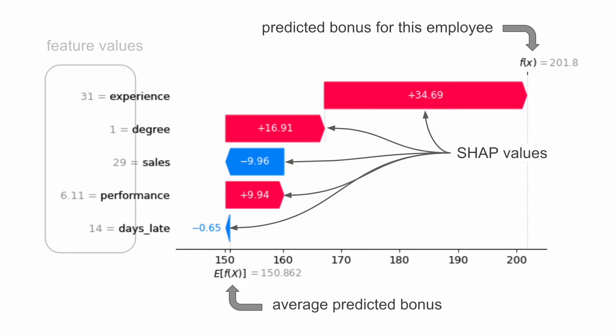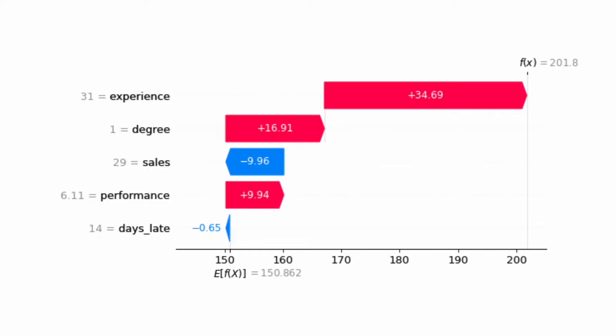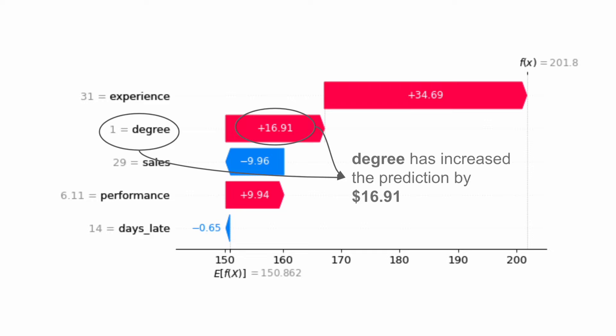The numbers on the y-axis are the feature values. For example, 31 equals experience tells us that this employee has 31 years of work experience. We can see that the SHAP value for degree is $16.91. Because this employee has a degree, the predicted bonus is $16.91 higher than the average predicted bonus. To simplify, we say the feature has increased the prediction. Keep in mind it is the feature's value in the context of the other feature values that produces the SHAP value — so the SHAP value for degree can change depending on which employee you are looking at, even if all the employees you look at have a degree.